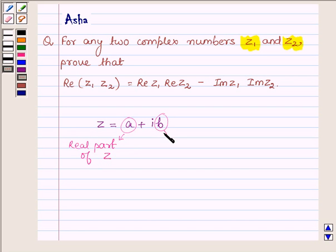And B is called the imaginary part of Z. So this idea we are going to use to prove the above problem. So this will be our key idea.